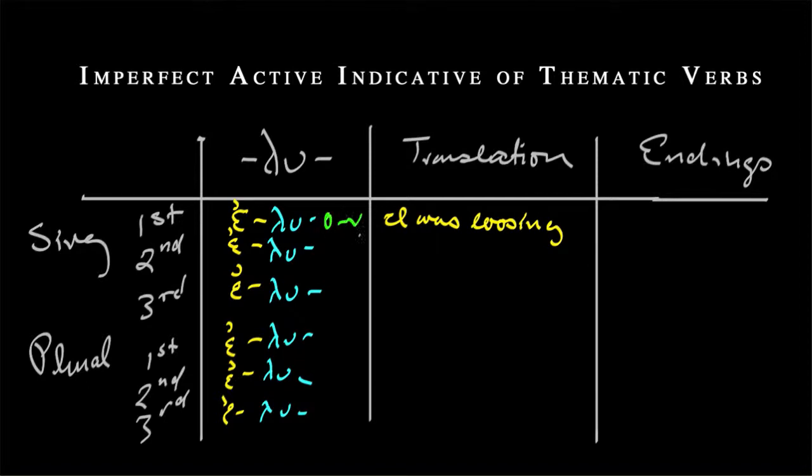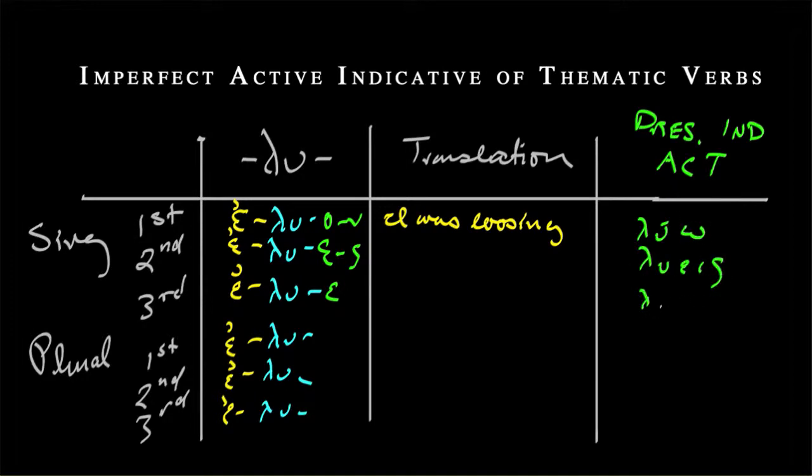So we see some similarities. We have an o sound in the first. Let me erase this endings, and let's write the present indicative active over here for comparison. So again, we'll have λύω, λύεις, λύει, that's not omega, λύει, λύομεν, λύετε, and then λύουσι, or ν. Let me get all those accents in. That was the present indicative active. I am loosing. You are loosing.